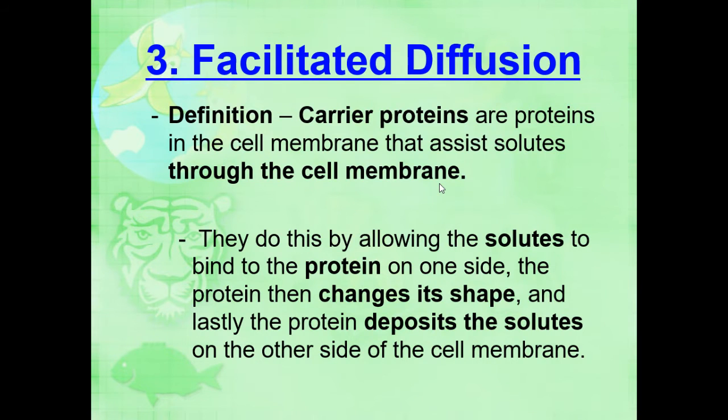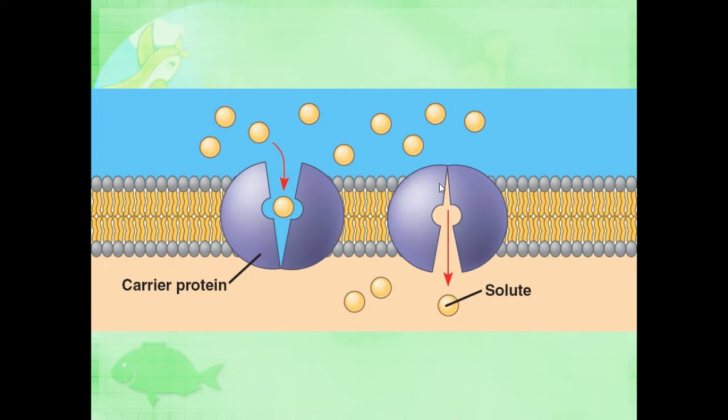They do this by allowing the solute to bind to the protein on one side, and the protein then changes its shape, and lastly, the protein deposits the solutes on the other side of the cell membrane. So the difference is it's not always open. It closes, so it opens up, allows a particle in, and then it closes, kind of like a teeter-totter, and allows it inside.